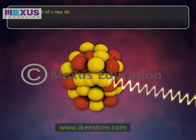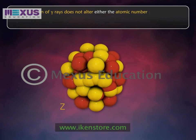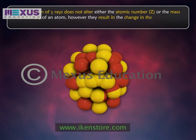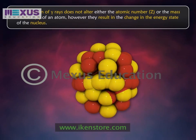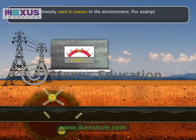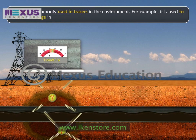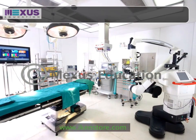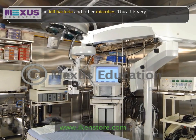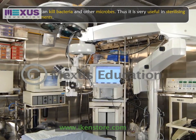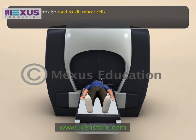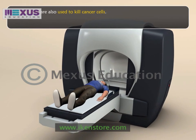The emission of gamma rays does not alter either the atomic number, Z, or the mass number, A, of an atom. However, they result in the change in the energy state of the nucleus. Gamma decay is commonly used in tracers in the environment — for example, to detect leakage in an oil pipeline. Intense gamma rays can kill bacteria and other microbes, making it very useful in sterilizing medical equipment. Gamma radiations are also used to kill cancer cells and to detect injuries related to the brain or internal organs.